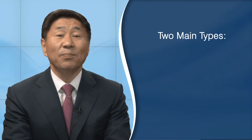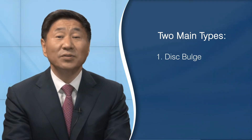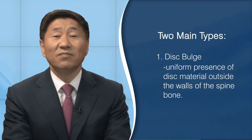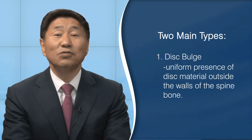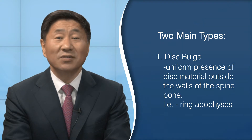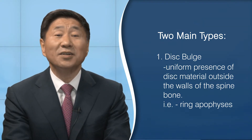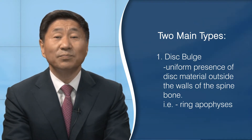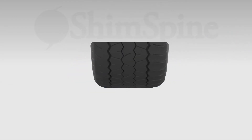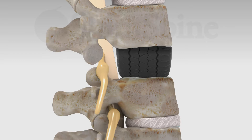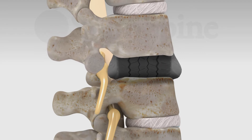To summarize the paper, disc findings can be broken down into two main types. The first is a disc bulge, which is a uniform presence of disc material outside the walls of the spine bone — what the paper calls the ring apophysis, or for the public, the margin of the spine bones. If you've seen our prior videos about disc bulges versus herniations, it is the bulging of the tire wall concept.